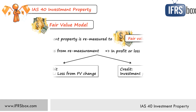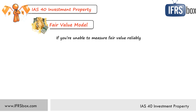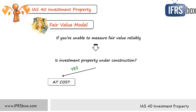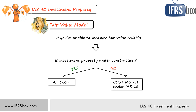If you're not able to measure fair value reliably, IAS 40 prescribes different treatment based on whether your investment property is under construction or not. If it's under construction and not yet completed, you need to keep it at cost until you can measure fair value reliably or the construction is completed. If it is completed investment property, you might need to keep it using the cost model under IAS 16. But this should be very rare — only when there is no active market — as IAS 40 assumes that in most cases you should be able to measure fair value reliably.